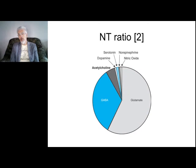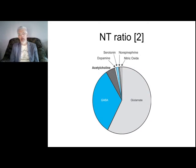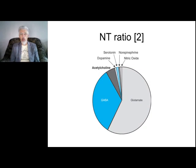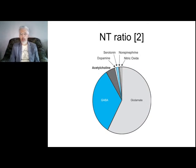Regarding the ratio of neurotransmitters: the main neurotransmitters by volume in our nervous system are glutamate and GABA. Other neurotransmitters like serotonin and dopamine are very important, but they are situated only in the neurons that make up specific pathways. Why do we have so much GABA? Because GABA is also present in the glial cells.